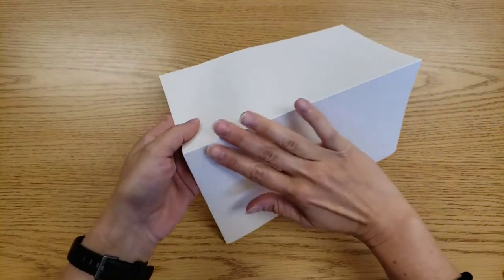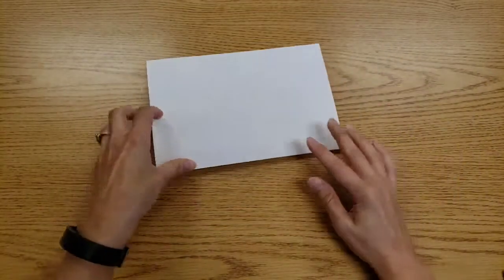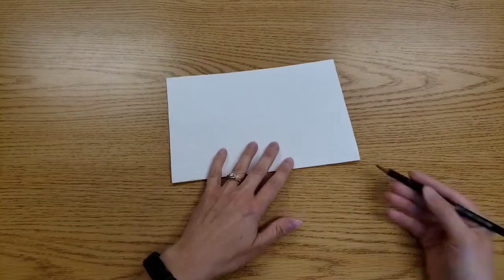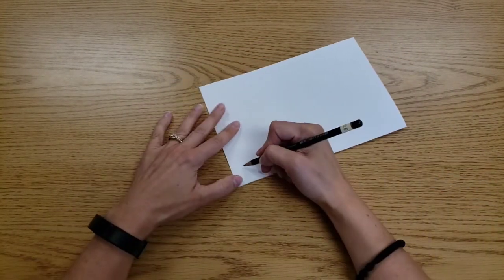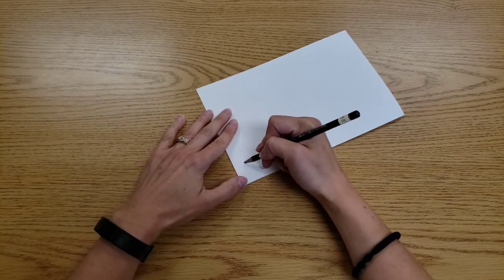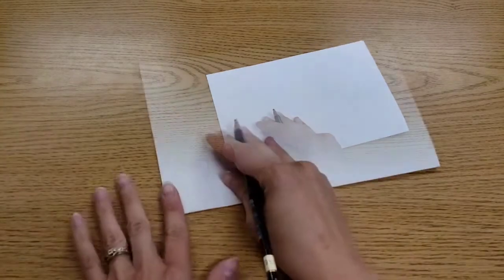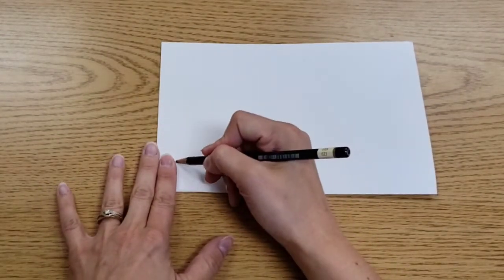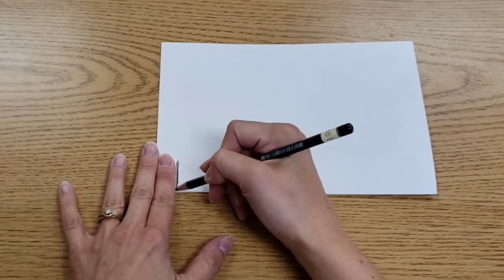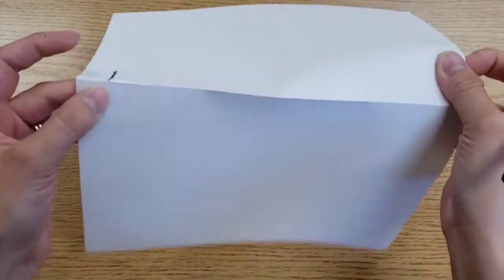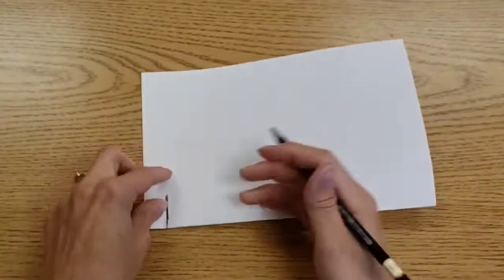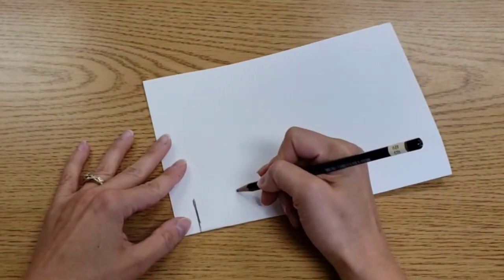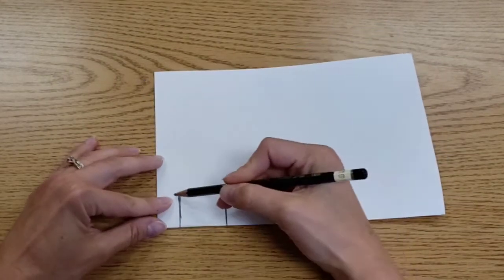Then on this folded edge, has to be the folded edge, you're going to draw a few lines in pairs. So here's what I mean. I'm going to leave a finger's width space between the edge of my paper and my first line. And that first line is touching the folded edge. Then I'm going to make a second line that's about the same height.